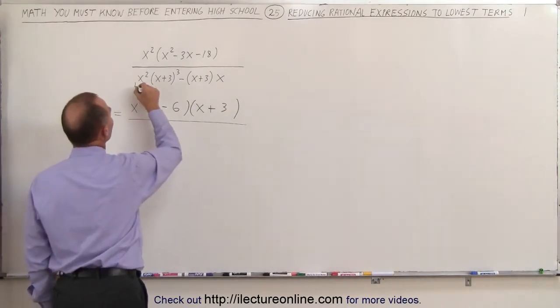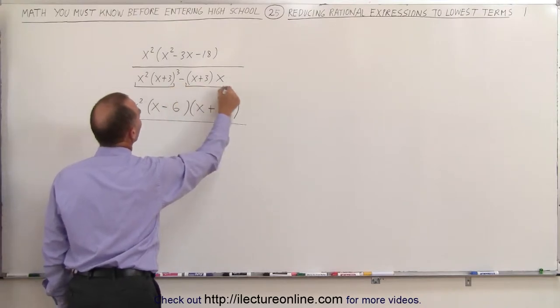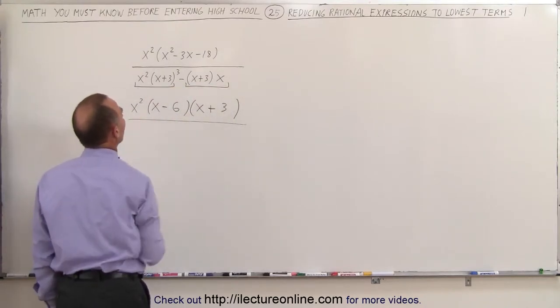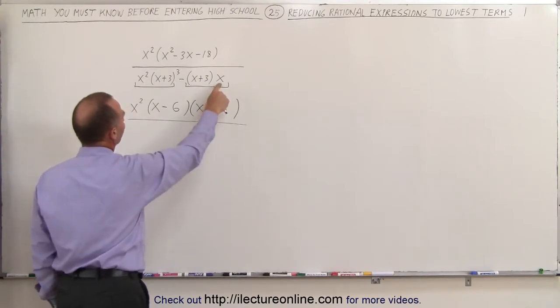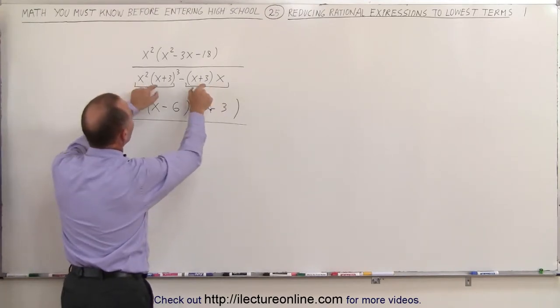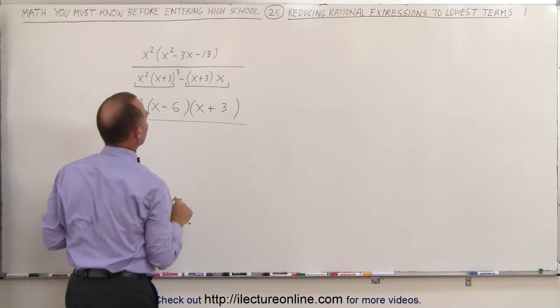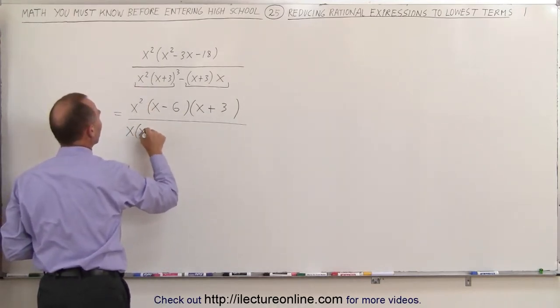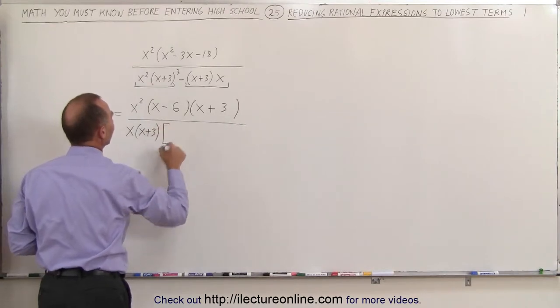In the denominator, notice I have this minus this. So I have two terms here. I need to factor out whatever is common out of the two terms. I can factor out an x, and I can factor out the quantity x plus 3. So in the denominator, I get x times x plus 3, and let's see what's left.